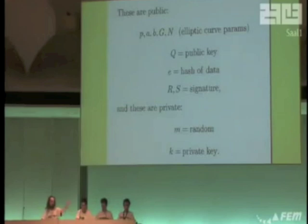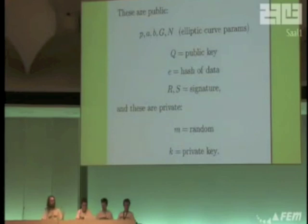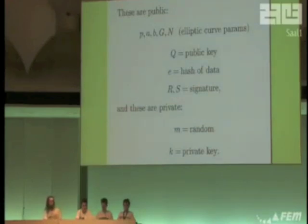But there are two things that are private in a single signature: k, the private key — which we want — and m, which is supposed to be a random number.